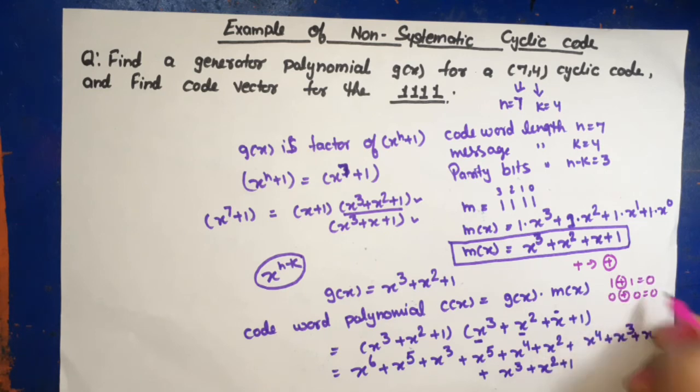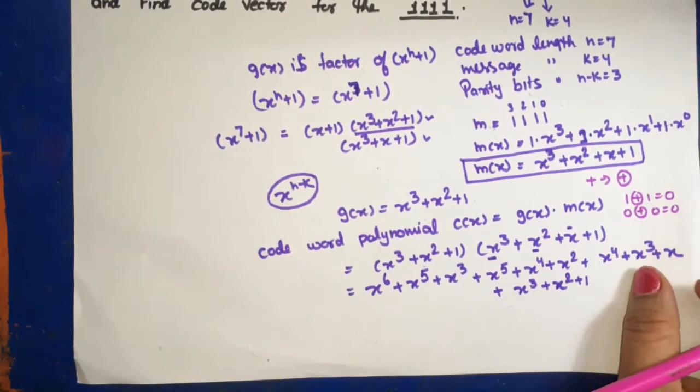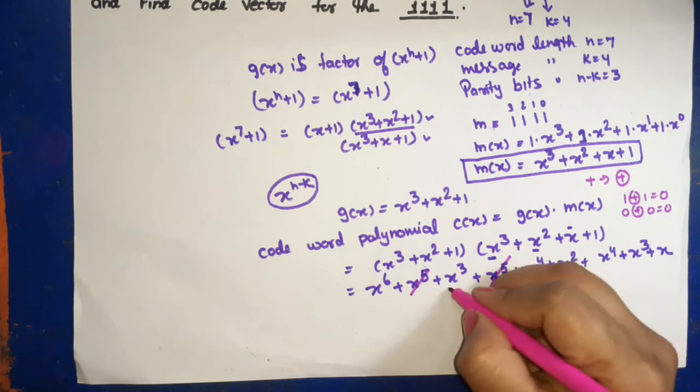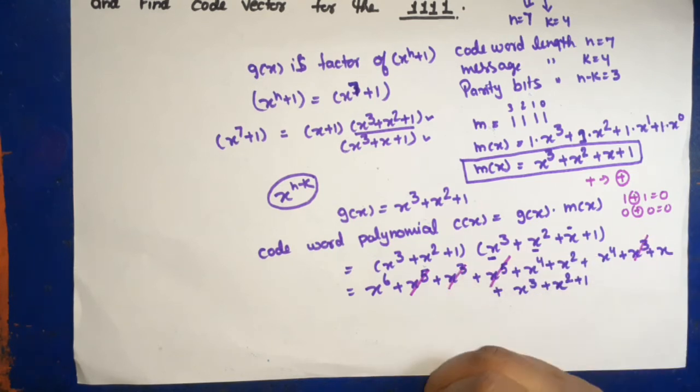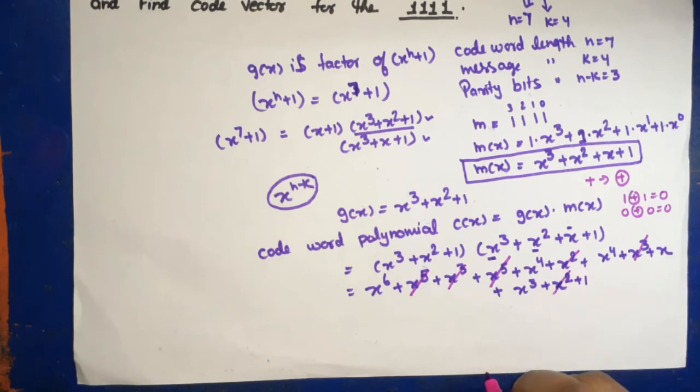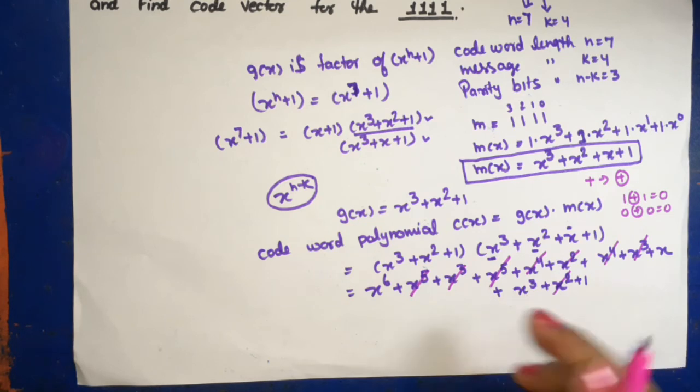Means if both input is same then output is 0, so same power will cancel each other out. x^5 cancelled x^5, x^3 cancelled x^3, next x square cancelled x square. Now x^4 cancelled x^4.